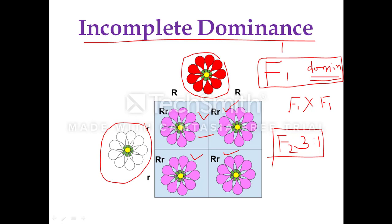Incomplete dominance occurs when a homozygous dominant parent is crossed with a recessive parent differing in a single contrasting character, and the F1 plants are different from the dominant parent. Here, the red flower color is controlled by the allele capital R, and the white flower color is controlled by small r. Capital R is dominant over small r, but in Mirabilis jalapa, the heterozygous condition gives pink flowers instead of red.